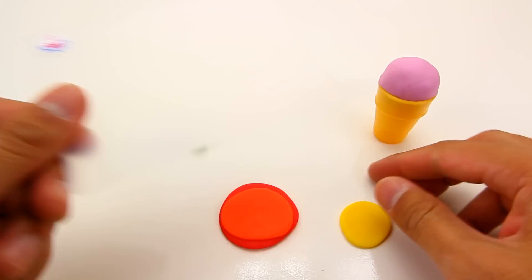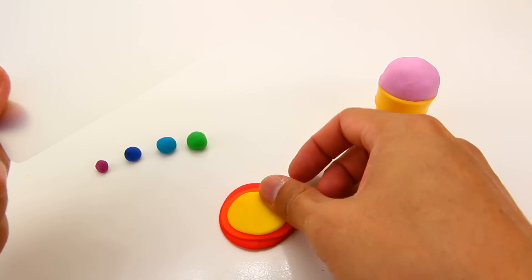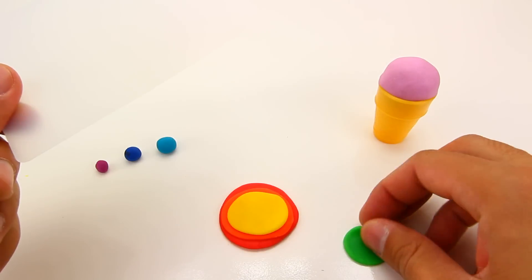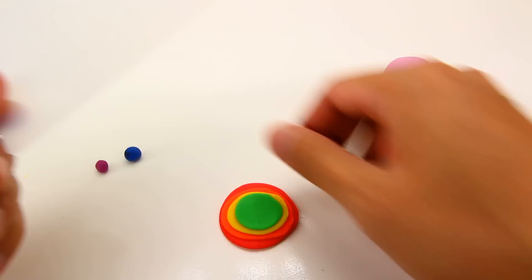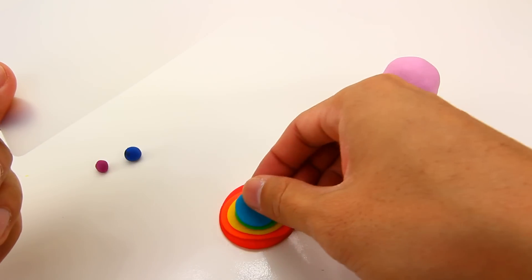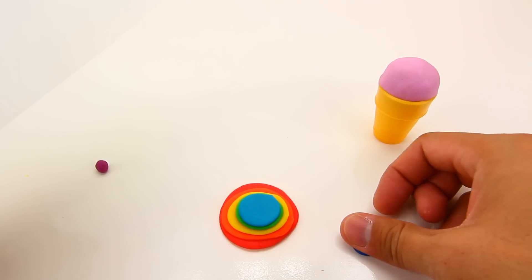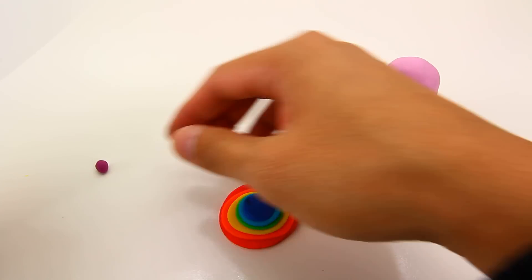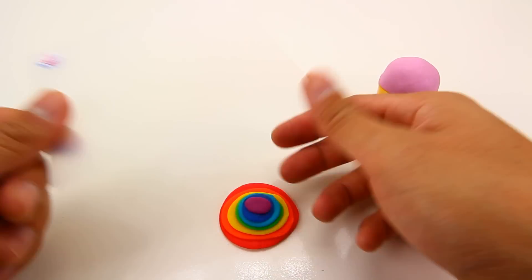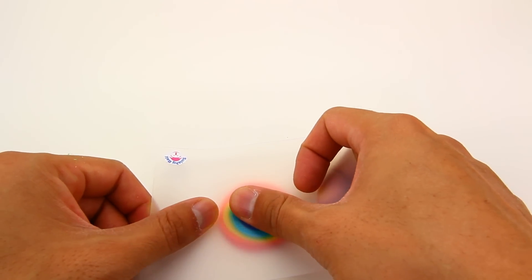Then yellow, and green, blue, indigo, and violet. And just press it all down together.